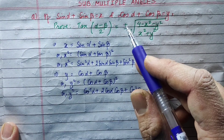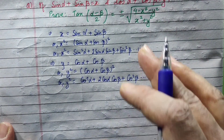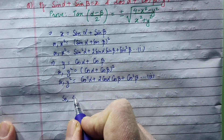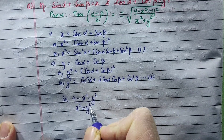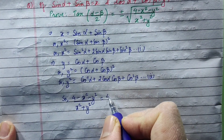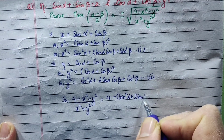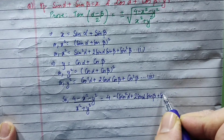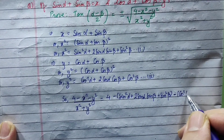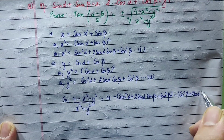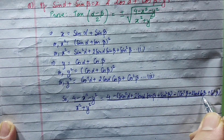Now we look at RHS, which is equal to plus minus root of something. For RHS, we compute (4 minus x square) over (x square plus y square). Here the value is 4 minus x square, so we expand: sin square alpha plus 2 sin alpha sin beta plus sin square beta.